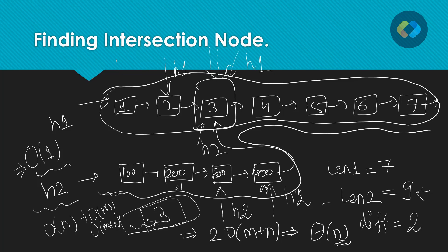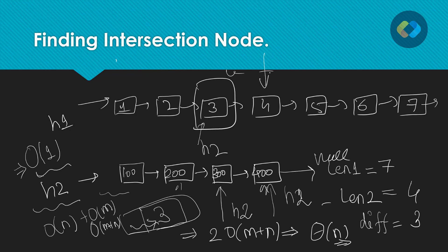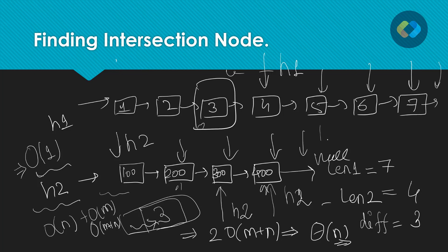So we calculate the length of both lists, find the difference, move the head of the bigger list by that difference, then start traversing both pointers one by one until either both pointers become null or they point to the same node. If both become null, that means there is no intersection. For example, if we remove the intersection link, the second list length becomes four and the first is seven — difference is three. We move head one by three, then traverse until both become null, and return null meaning no intersection found.